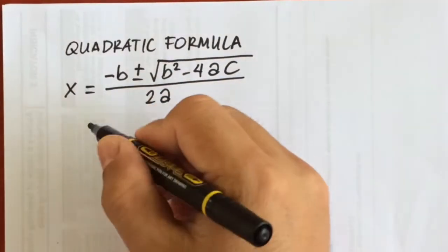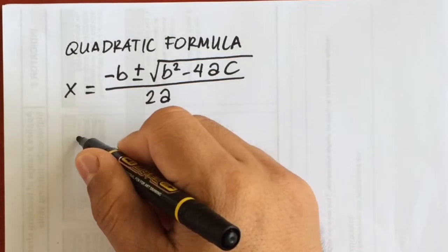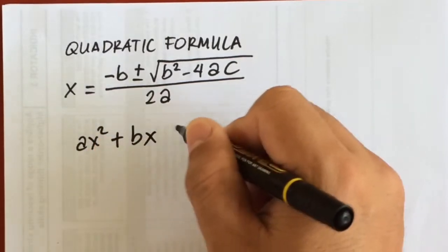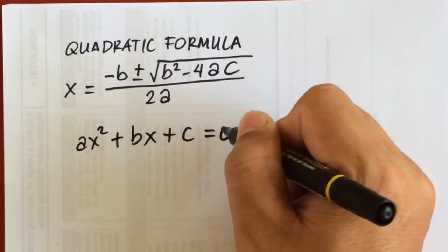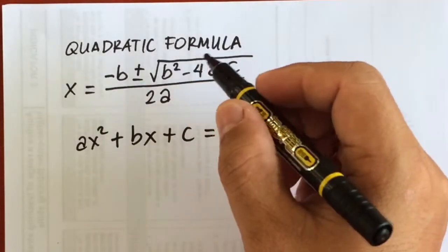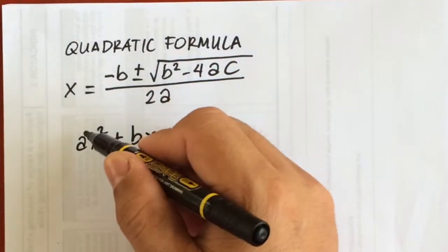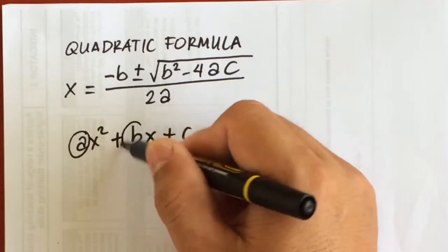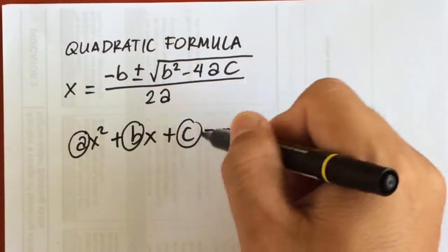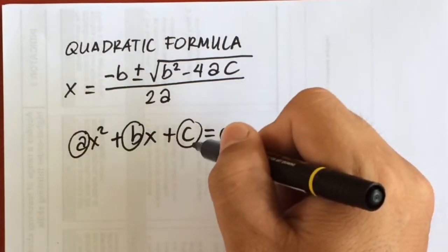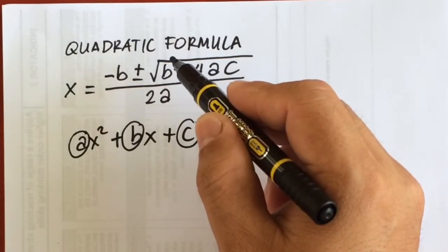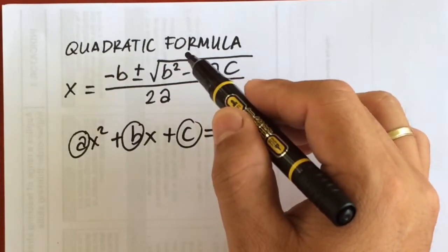A quadratic equation is in the form ax squared plus bx plus c equals 0. What we're going to do using the quadratic formula is take the values of a, b, and c, and after finding those values, we'll substitute them into the formula.